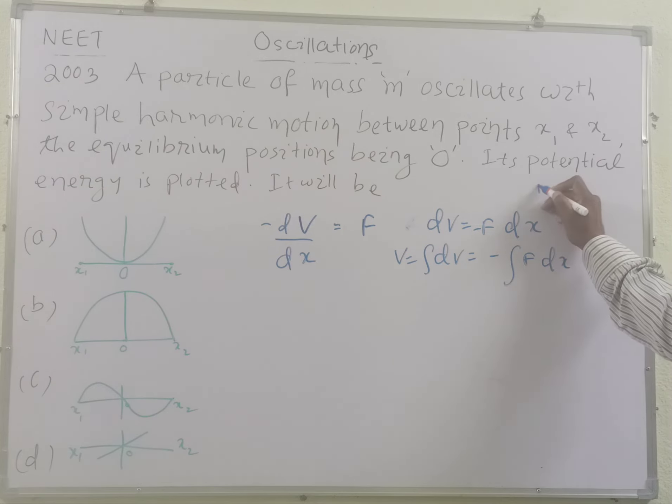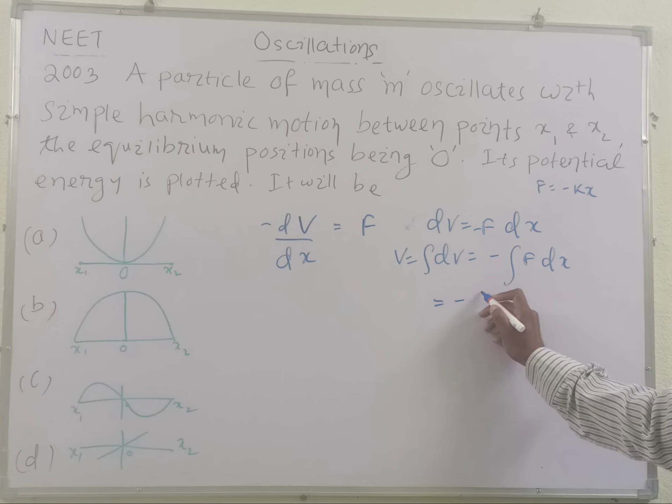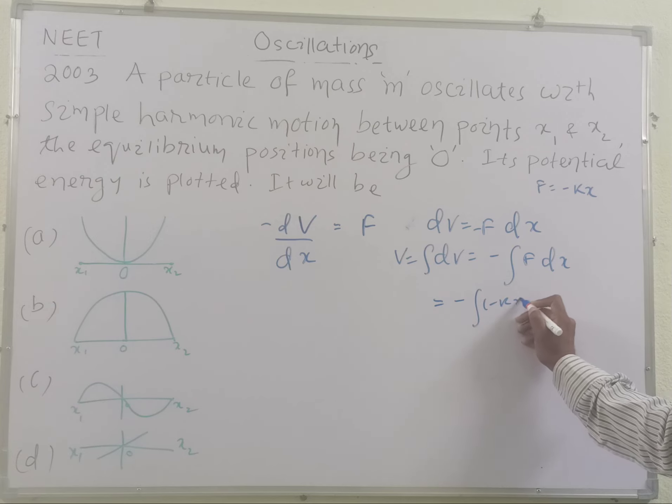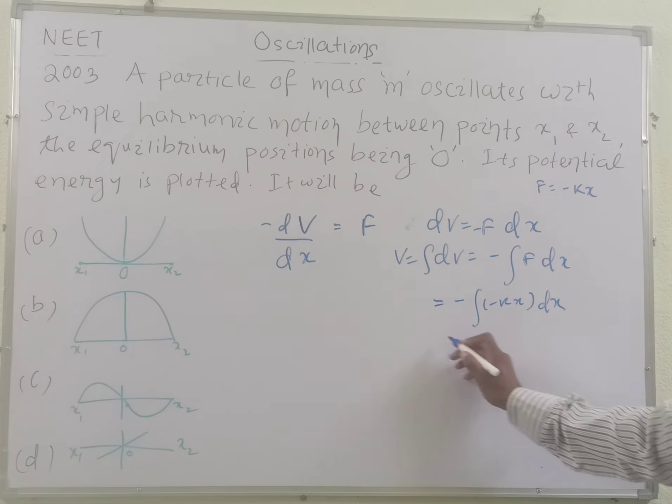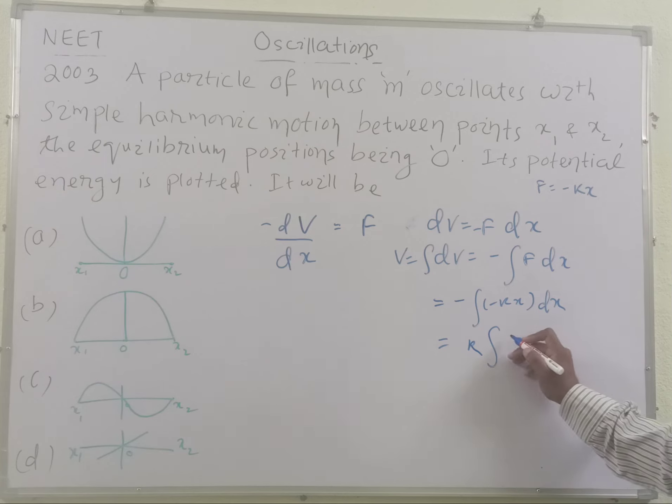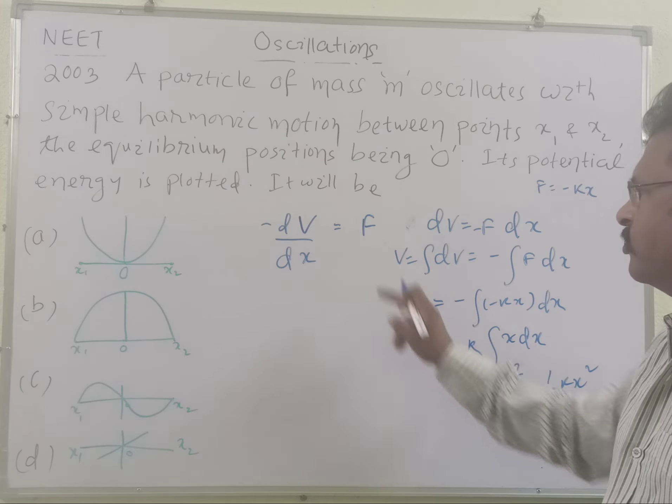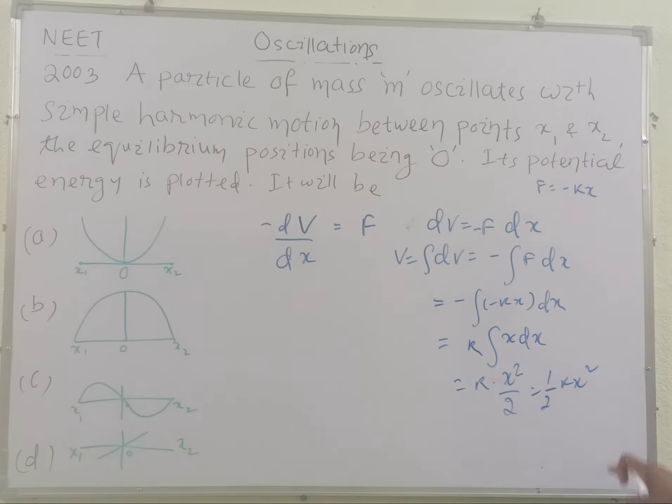And what is force? Force is equal to minus KX, where K is the force constant. So this can be written as minus of minus KX integration with respect to dx. So this becomes minus, minus becomes plus. And this force constant is a constant, so it is taken outside. And we write this as integral K dx, or we may write this as KX² by 2, or half KX². This is the formula for the potential energy of a body.